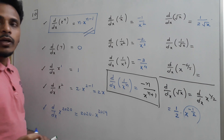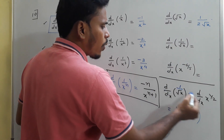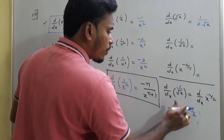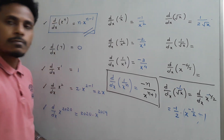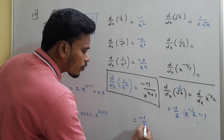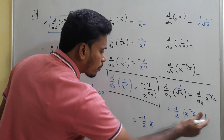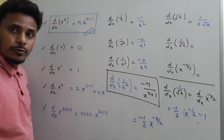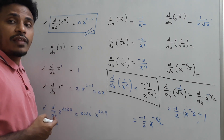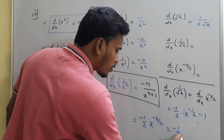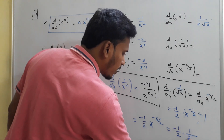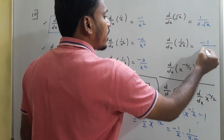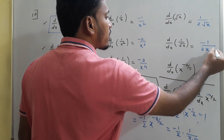For d/dx of 1/√x, rewrite as x^(-1/2). Applying the rule: -1/2 times x to the power -1/2 minus 1 equals -1/2 times x^(-3/2). Since the negative power moves to the denominator, this becomes -1/2 times 1/(x·√x), so the answer is -1/(2x√x).